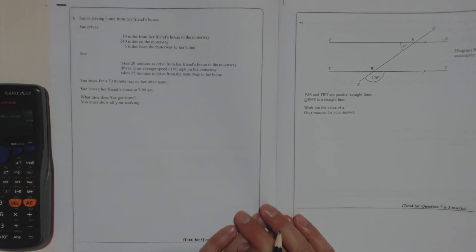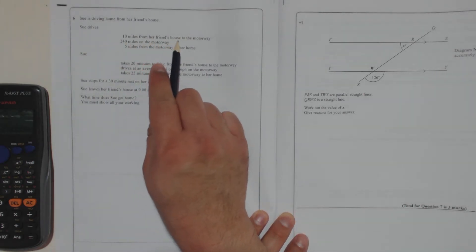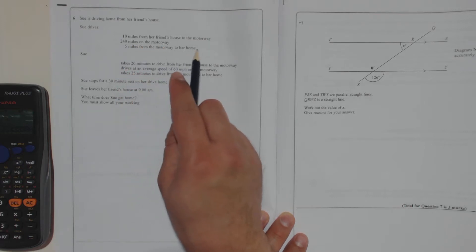Right, question six. Sue is driving home from her friend's house. Sue drives 10 miles from her friend's house to the motorway, 240 miles on the motorway, and 5 miles from the motorway to her home.